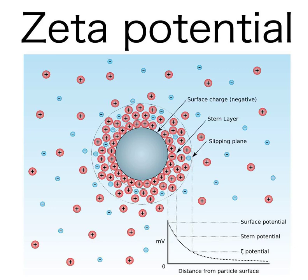Zeta potential is the electrical potential at the slipping plane. This plane is the interface which separates mobile fluid from fluid that remains attached to the surface. Zeta potential is a scientific term for electrokinetic potential in colloidal dispersions. In the colloidal chemistry literature, it is usually denoted using the Greek letter zeta, hence zeta potential.